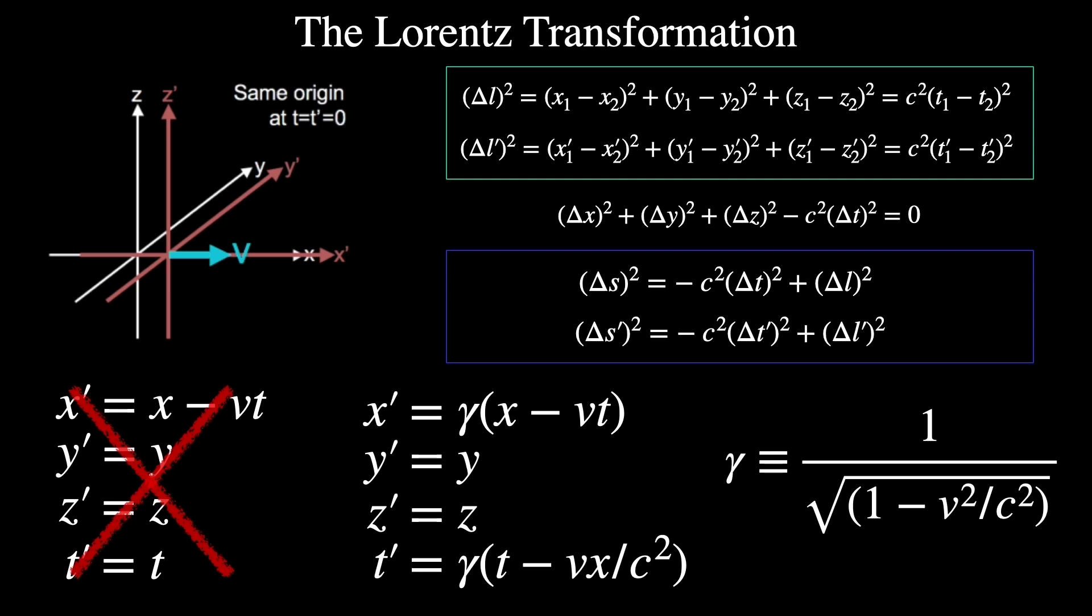Relatively, the unprimed frame sees the prime frame moving to the right, and the prime sees unprimed moving to the left.